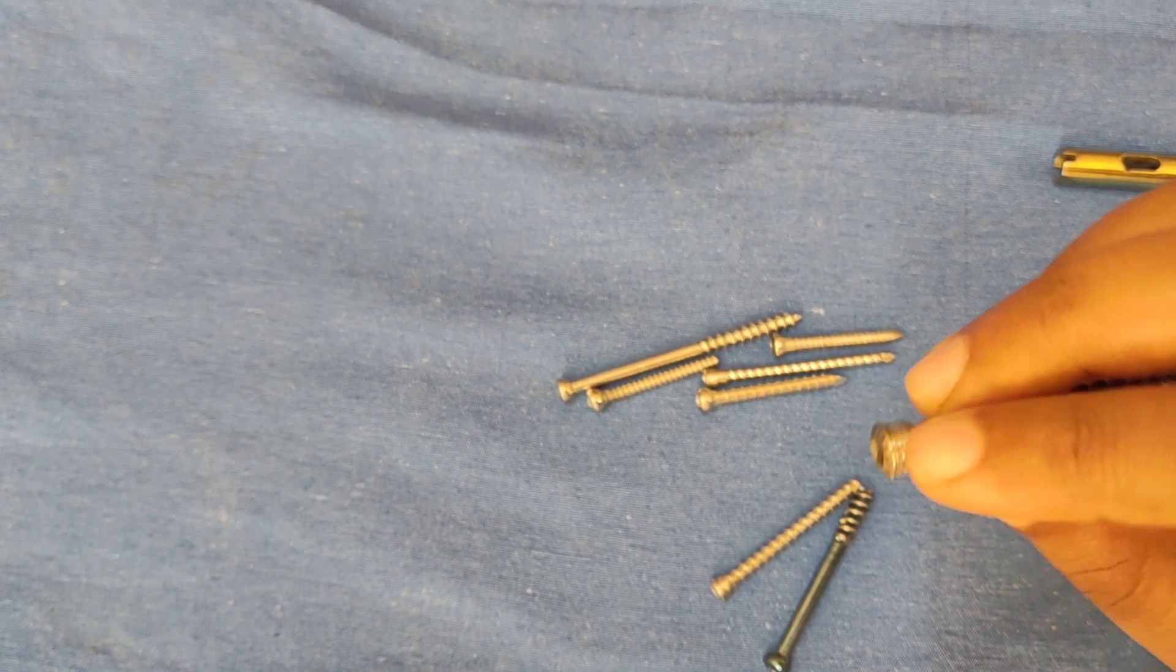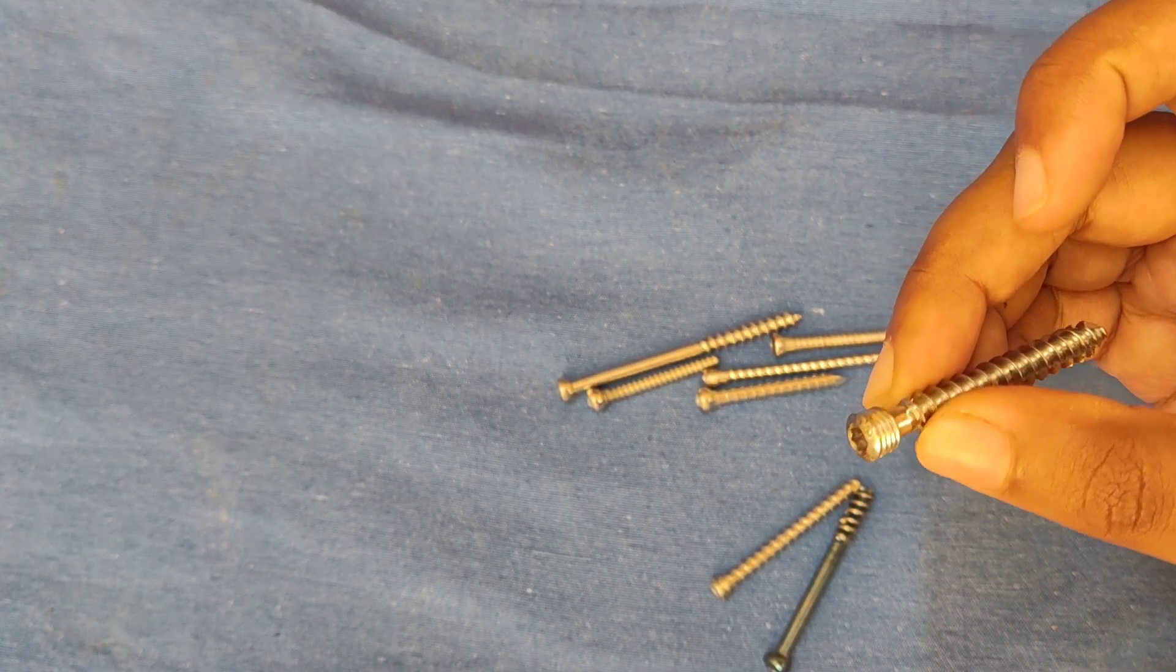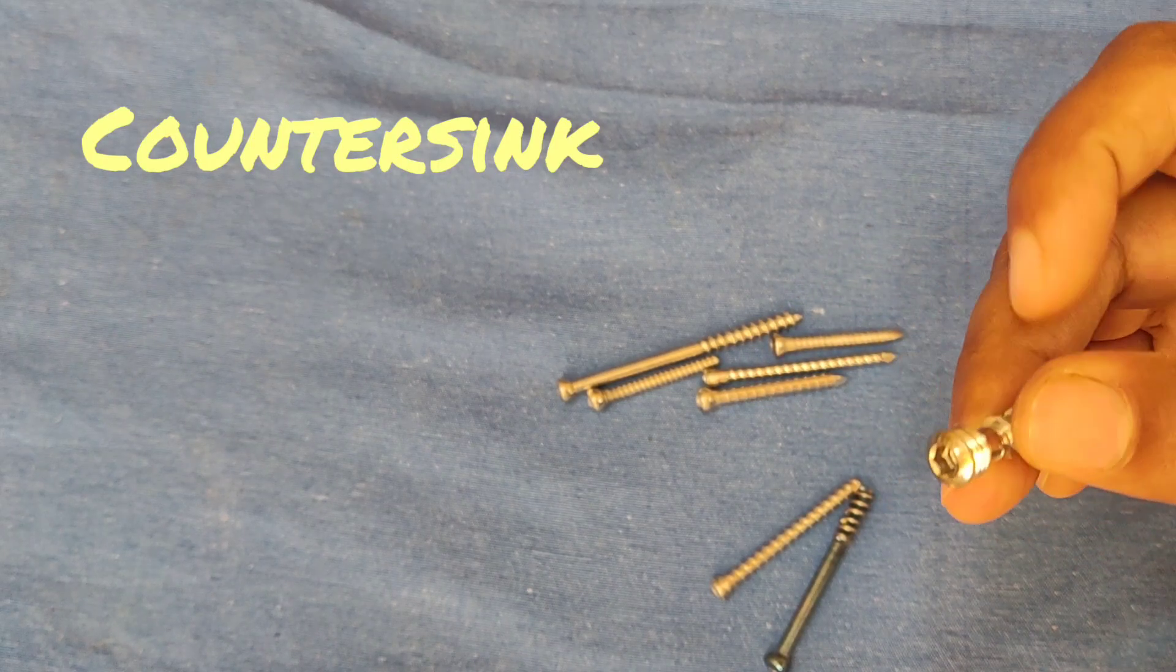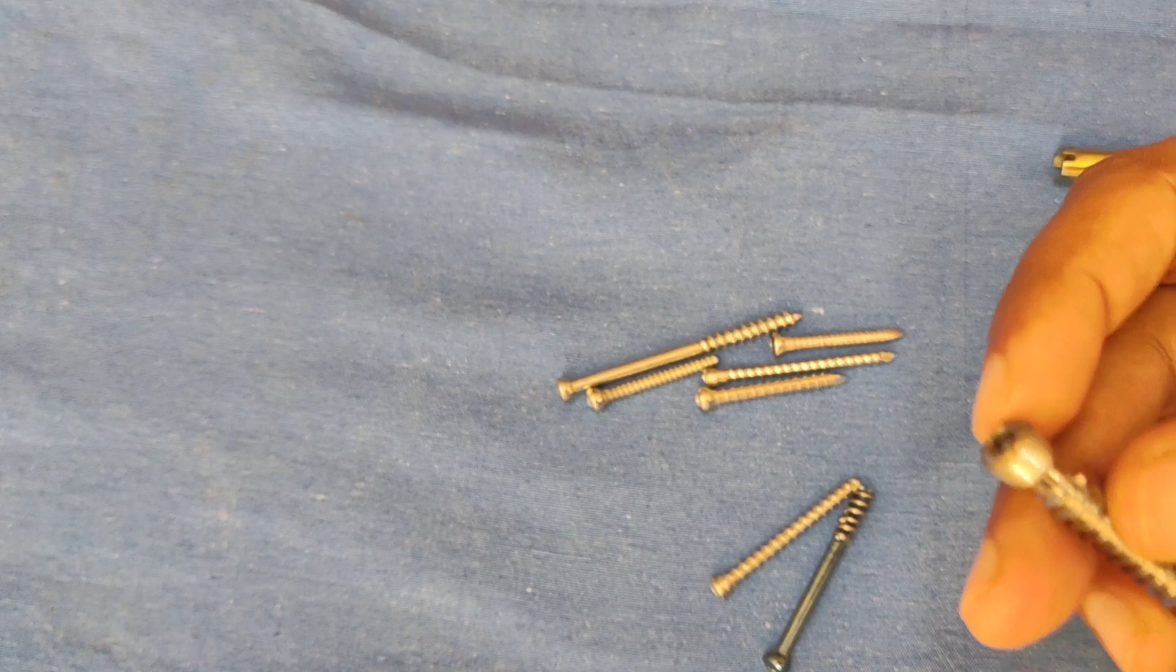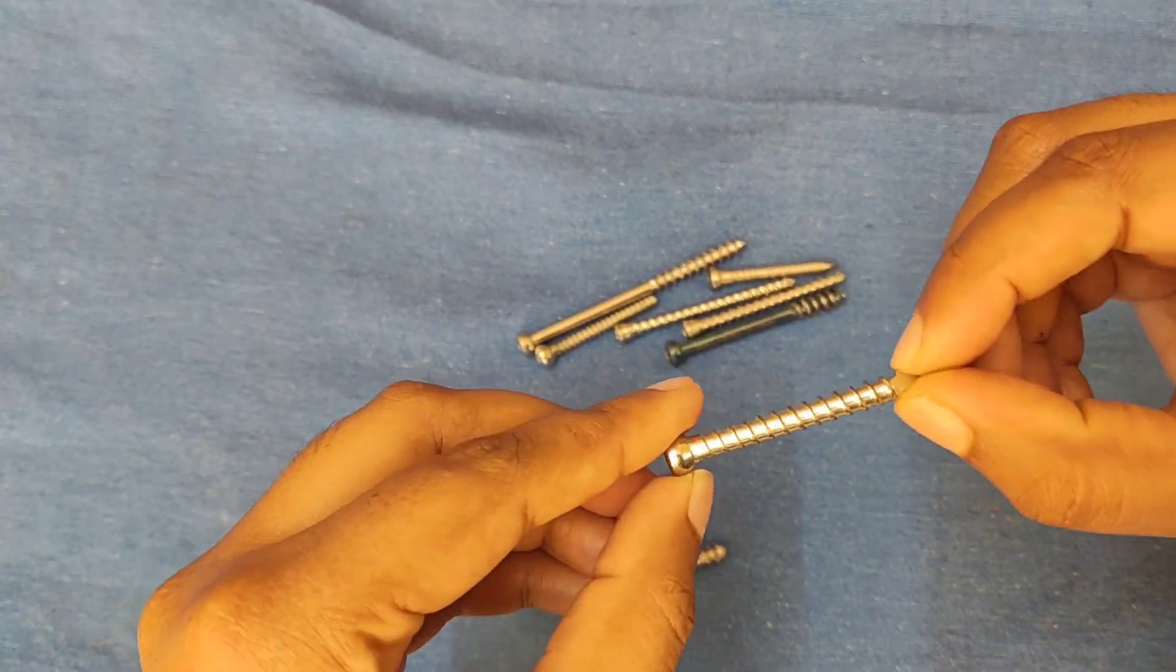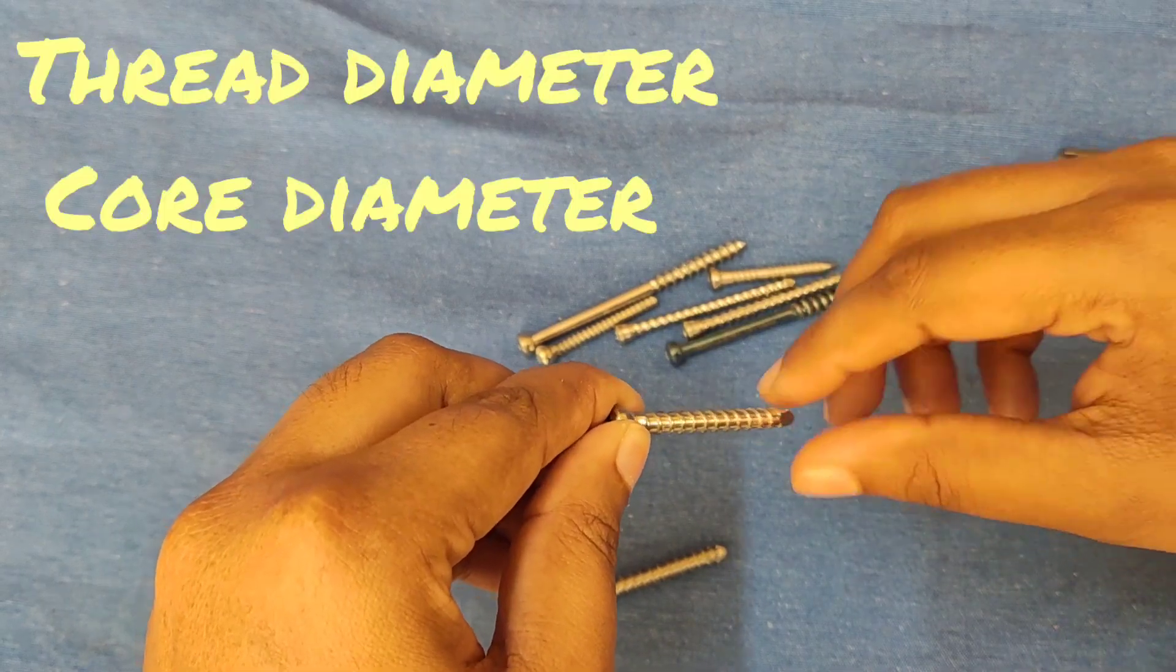Head has a recess for attachment to screwdriver. There is also a countersink for buttress which prevents hinging of head into bone. Shaft links between head and thread. Thread makes purchase of screw with the bone.